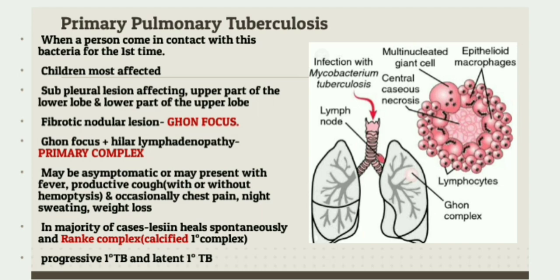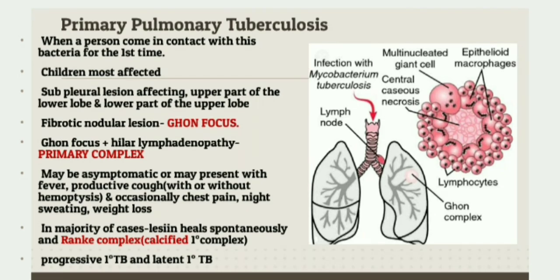Very rarely, in children with impaired immunity, it becomes progressive primary TB, which spreads by local invasion and by lymphatics. What is latent primary TB? The bacteria does not die, but stays dormant inside the person without causing any manifestations. However, this can undergo reactivation and cause disease at any point in that person's life.